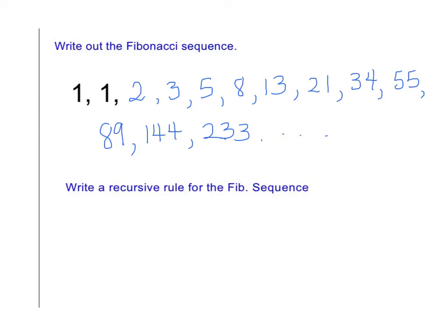And you find the Fibonacci Sequence by taking, you always start with 1 and 1. And then the next number is found by doing 1 plus 1 is 2. 1 plus 2 is 3. 2 plus 3 is 5.